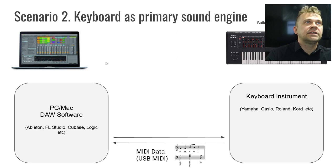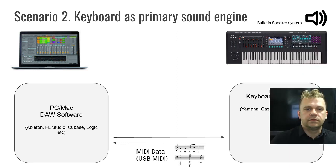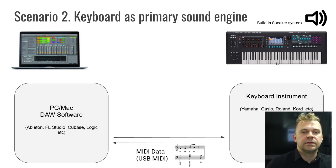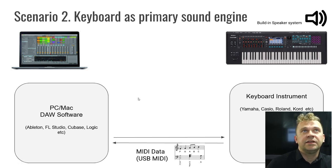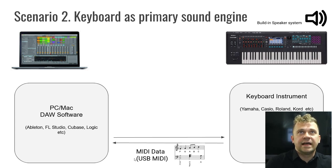The connectivity for scenario two is very simple. The keyboard's speakers are used for playback. We only use bidirectional MIDI data: we play something on the keyboard, it gets recorded in the DAW, we manipulate the data there, and when we hit play, the notes are sent back to the keyboard instrument to produce sound. The computer is completely silent — it doesn't need an audio interface in this scenario. You're using the keyboard's own speakers for playback. This is a significant advantage.